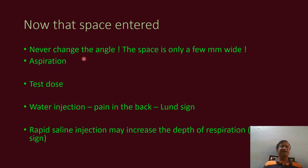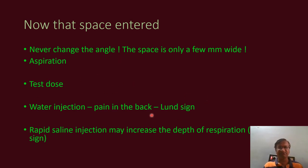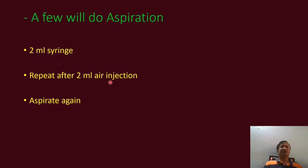Now that the space is entered, never change the angle — the space is only a few millimeters. Do not continue manipulating the needle after entry is confirmed. Aspirate, then give the test dose. If you inject water, there will be pain in the back. There are certain signs: rapid onset, signs of injection, mid-depth, and back pain. A few will perform aspiration with a 2 ml syringe — repeat 2 ml air and aspirate to confirm.